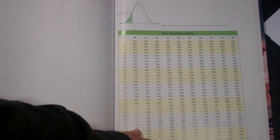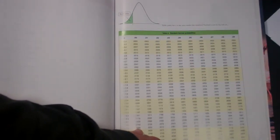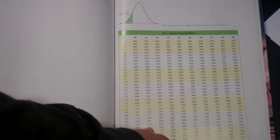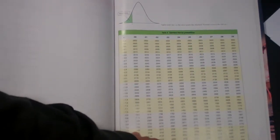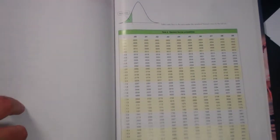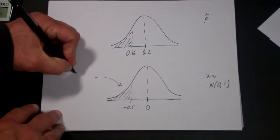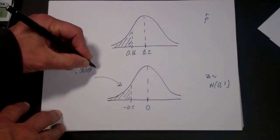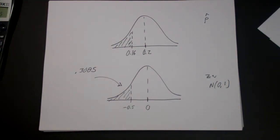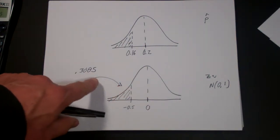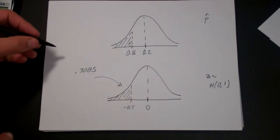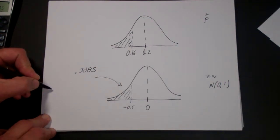And then going over, that's minus 0.50, 0.51, 0.52, etc., 0.50. So we have 0.3085. In this case, we actually want the value to the left, so we take that value directly.